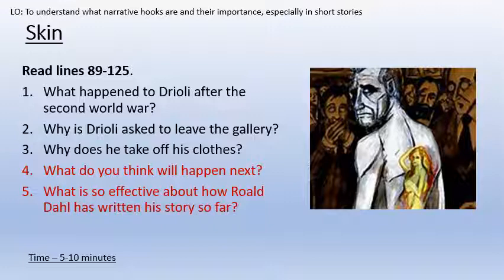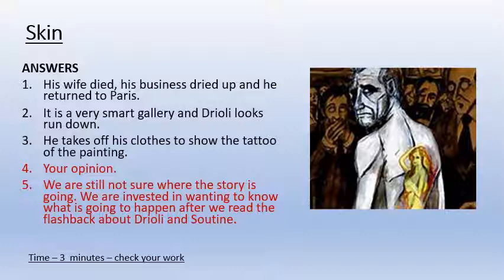Right, that's up to line 125. So what happened to Drioli after the Second World War? Why is Drioli asked to leave the gallery? Why does he take off his clothes? What do you think will happen next? What is so effective about how Roald Dahl has written this story so far? Full sentence answers to those please. And here are the answers. His wife died, his business dried up and he returned to Paris. It's a very smart gallery and Drioli looks run down. He takes off his clothes to show the tattoo of the painting. We are still not sure where the story is going - we are invested in wanting to know what is going to happen after reading the flashback about Drioli and Soutine. Answer those questions in full sentences and upload your work to Class Charts. Thank you very much, Year 9.